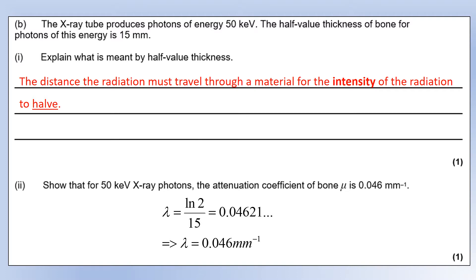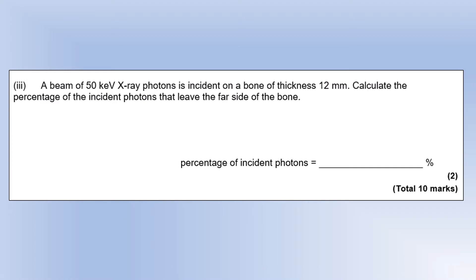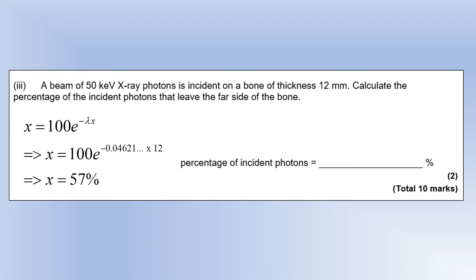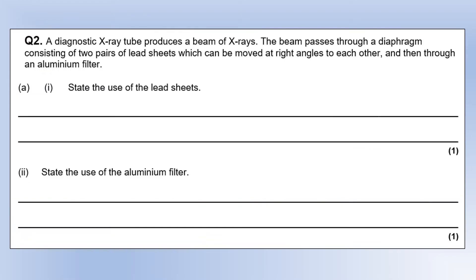For the final question on this x-ray tube: a 50 kiloelectron volt x-ray photon is incident on bone of thickness 12 millimeters — calculate the percentage of incident photons that leave the far side. Using 100 as the incident percentage, we apply the attenuation equation with the decay constant and thickness of 12 millimeters, giving us 57 percent of photons transmitted through the far side of the bone.